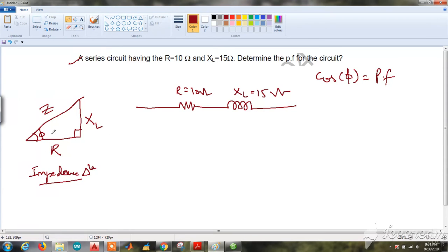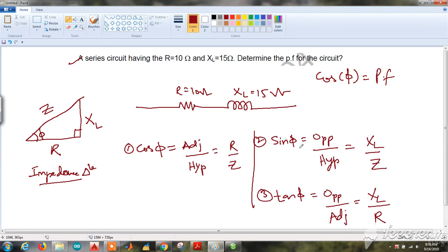Sine, cos, tan—these are the trigonometrical methods. By sin φ and tan φ, these are the trigonometrical methods. By cos φ we can directly get our power factor. It is R divided by Z.